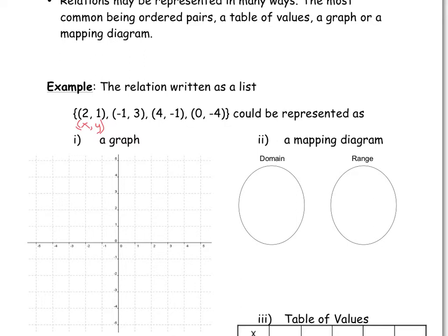On a graph, what that would look like is that I would simply put all these points on a graph. The point (2, 1) would be at x=2, y=1. Here you'd have the point (-1, 3), and we'd have the point (4, -1) over here, and the point (0, -4) down there. So this would be a graph representation of this list of points.